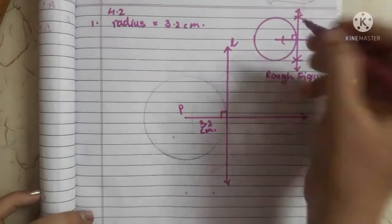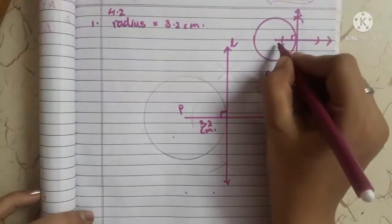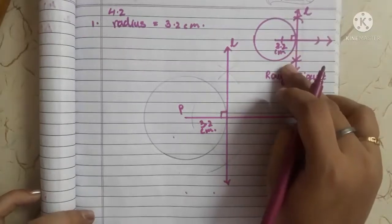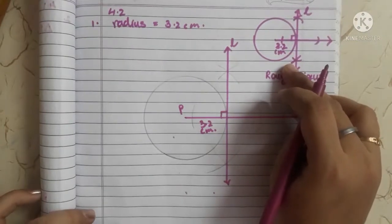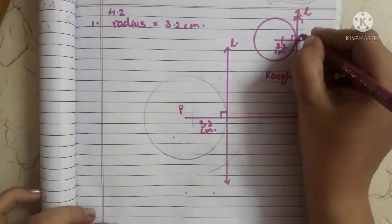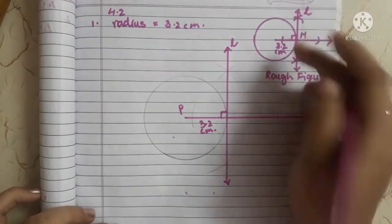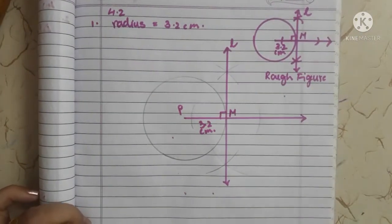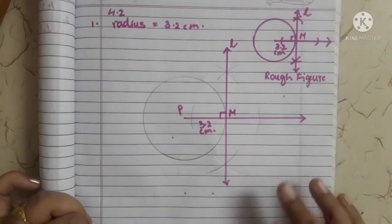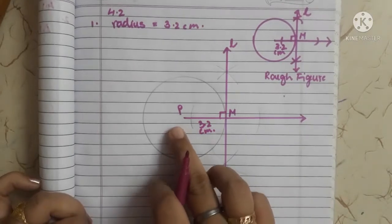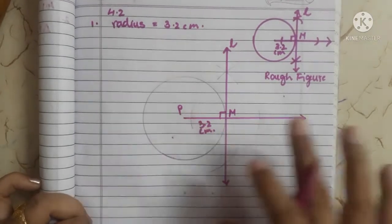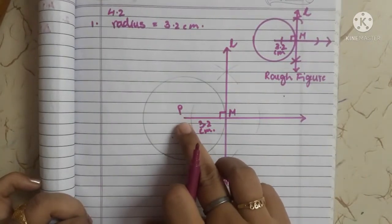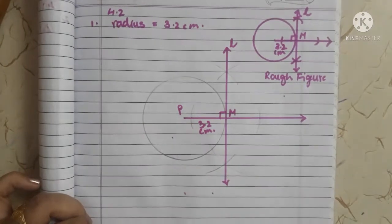On the figure, make sure you write all measurements. 3.2 is the radius and this is the required tangent. I am giving the point the name M — you can give any name you want. However, whatever is given in the question you cannot change. Here the center of the circle is given as P, so I have written P.